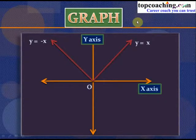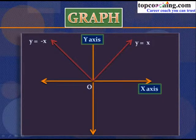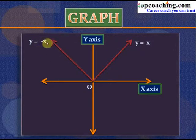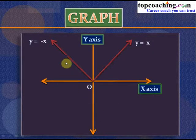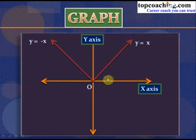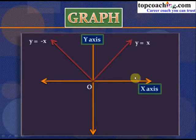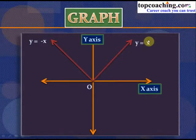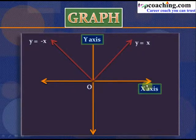The graph of y = |x| is defined as y = x for x ≥ 0 and y = −x for x < 0. The red portion shows this graph; the right-hand side represents the part of the line y = x for x ≥ 0.